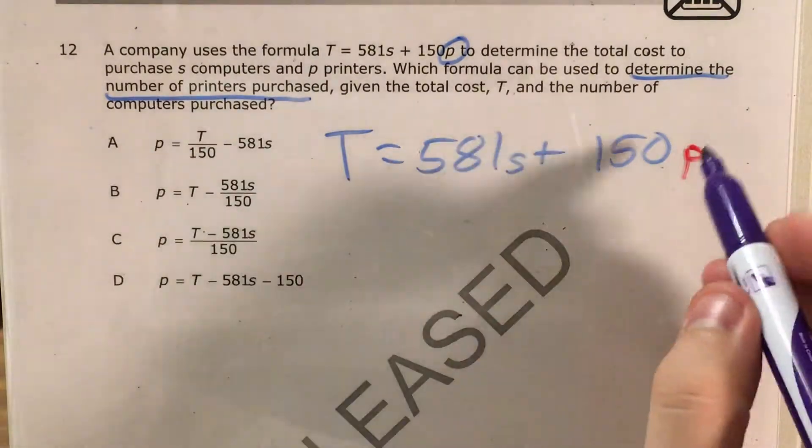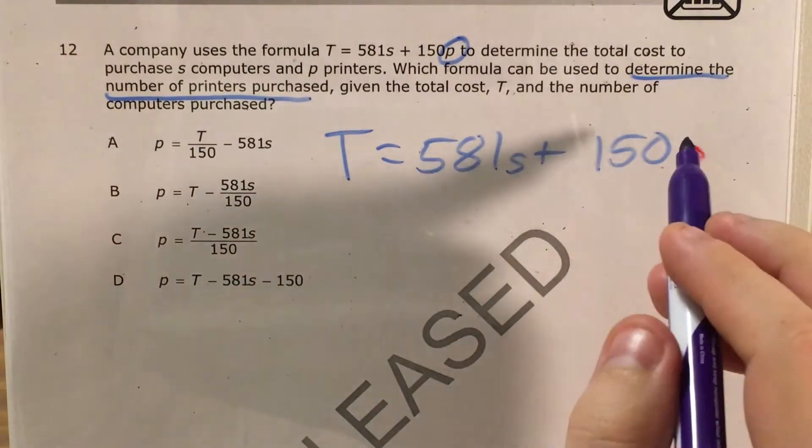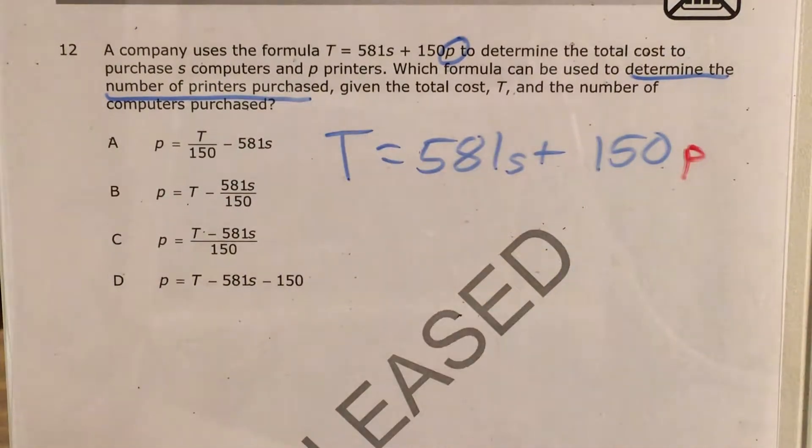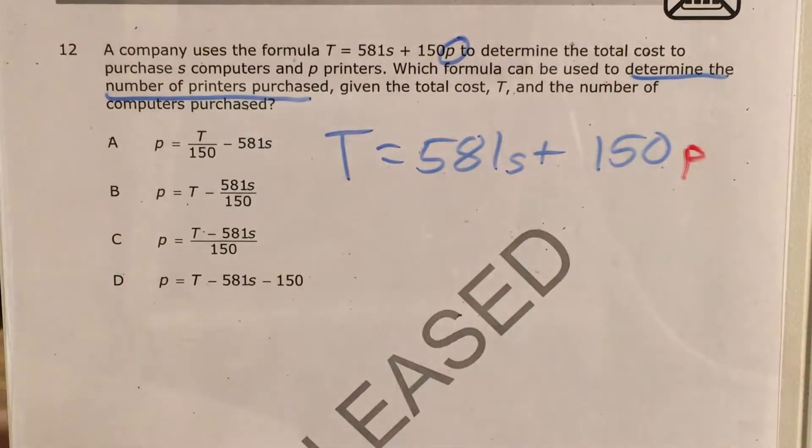All right, so my goal is to get P by itself. And now, if I think in terms of getting P by itself, I can treat this like a regular two-step equation. And I can say, okay, it's being multiplied by 150. And then I'm adding 581s to it. I want to get rid of this stuff.